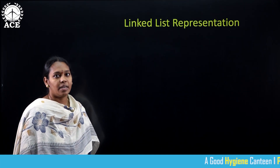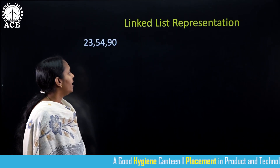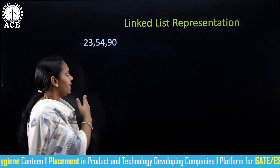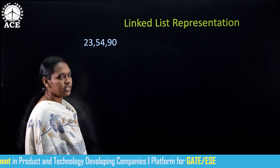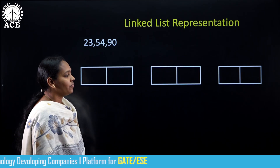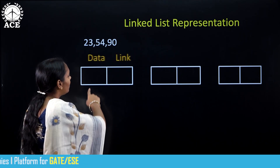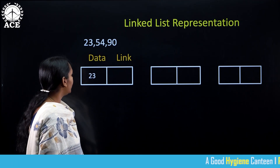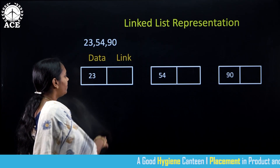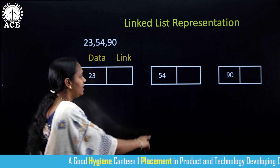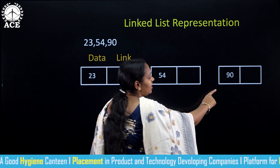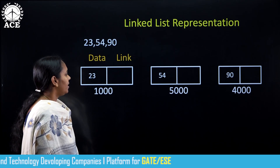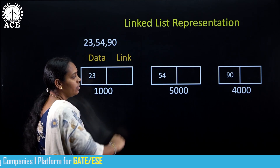Now we will see the representation of a linked list. Here we have a list of elements 23, 54, and 90. I want to arrange these numbers in a linked list. For this purpose, I need to create three nodes. Each node consists of a data part and a link part. I am going to arrange the numbers accordingly: 23, 54, 90. In the first node we have element 23, in the second node we have element 54, and in the third node we have element 90. I am assuming the addresses are 1000, 5000, and 4000 accordingly.